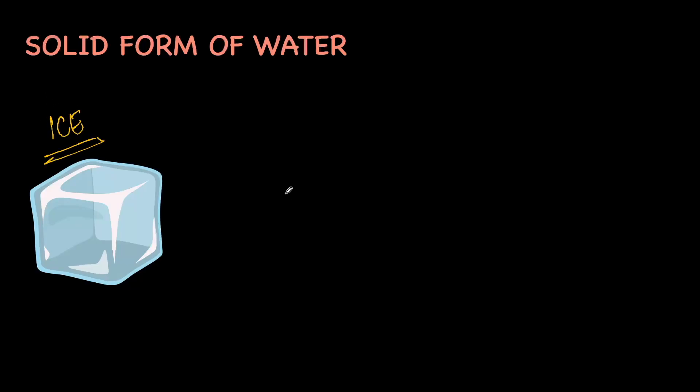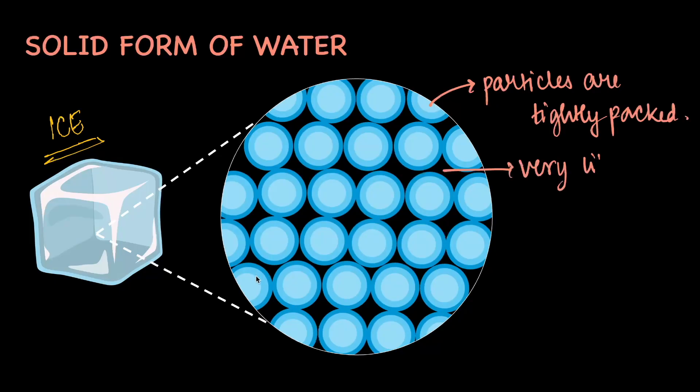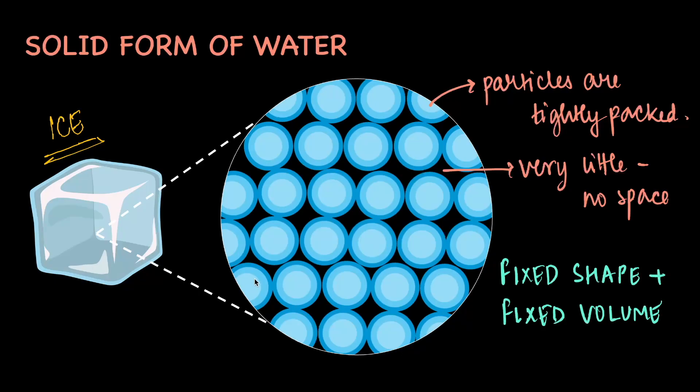So, if you keep it in the freezer, where the temperature is below zero degrees, up to let's say minus two or maybe minus three, you would notice that the same particles of water have changed their arrangement, where now they are arranged very close to each other or they are tightly packed. And along with that, the spaces have reduced considerably. As a result of which, we see that it ends up getting a fixed shape and a fixed volume.